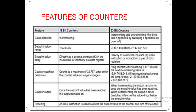The set point value can be entered directly as a decimal constant K in the instruction, or indirectly in a data register. In a 32-bit counter, you can store it directly as a decimal constant K or indirectly in a pair of data registers — it needs two registers. A 16-bit counter requires only one register.